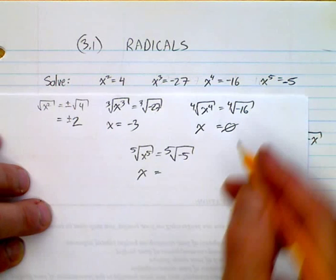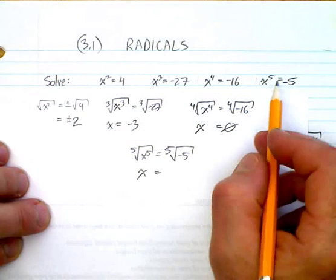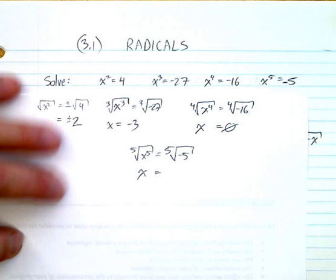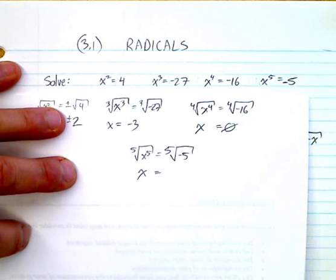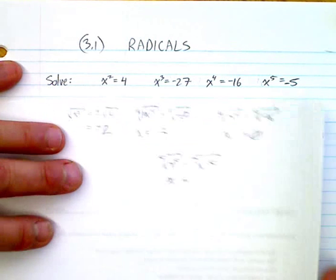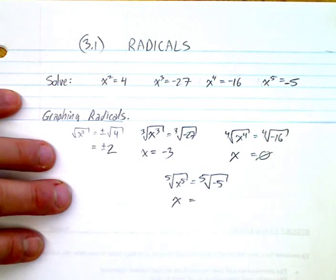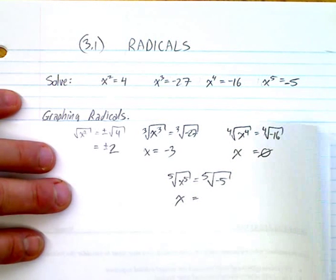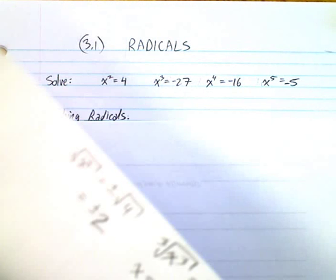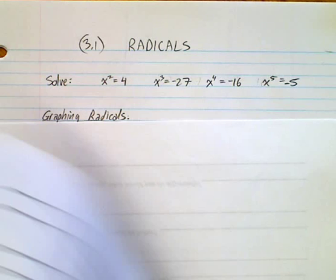So: you can take odd roots of negative numbers, but you cannot take even roots of negative numbers. That's just something you should know.